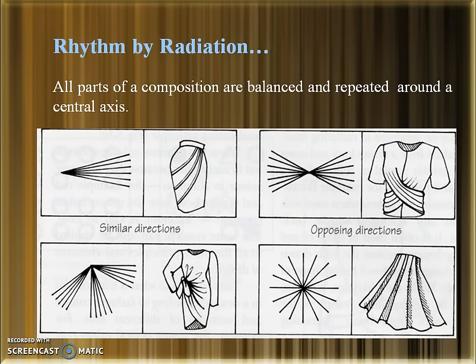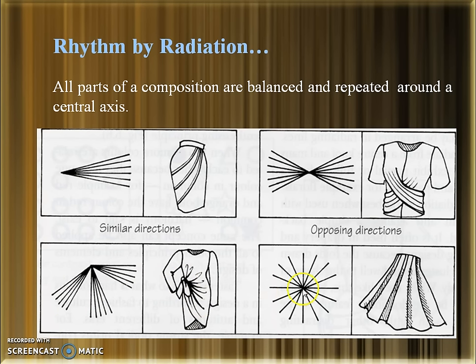Then comes Rhythm by Radiation, where all parts of the composition are balanced and repeated around a central axis. In all the examples shown, there is a central axis and the composition radiates from it in a circular format, radiating from a central point.